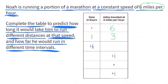The next amount of time is a little bit trickier — it's 1 and 1 third hours. One way to figure this out is to figure out how far he would travel in 1 third of an hour. If he travels 6 miles in 1 hour, then he would travel 1 third of 6 miles in 1 third of an hour.